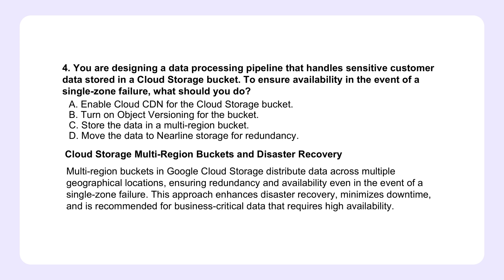Speaking of control, question four throws us a curveball: disaster recovery. Imagine your data is stored safely in cloud storage, but then an entire zone goes offline — like a data apocalypse. What can we do to safeguard against that kind of catastrophic failure? Multi-region storage is our solution here. Picture your data being mirrored in multiple locations, kind of like having backup generators in different regions. If one location goes down, the others are still running, so you've got continuous data access.